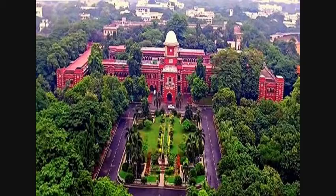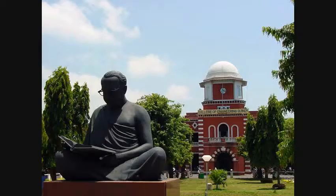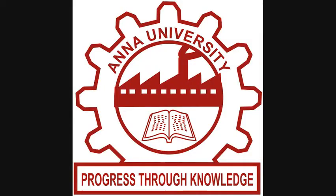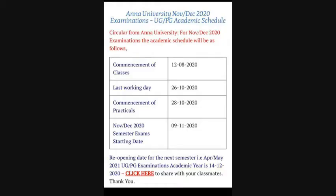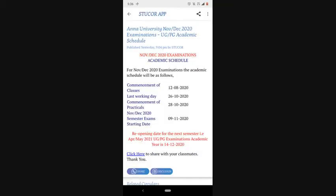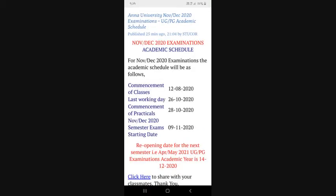When the class is over, when the practical examination starts, when the semester starts — the class starts in August and in October 26 and October 28. These are the key dates for when classes and students begin the new semester.